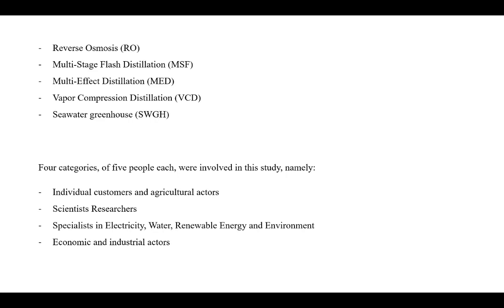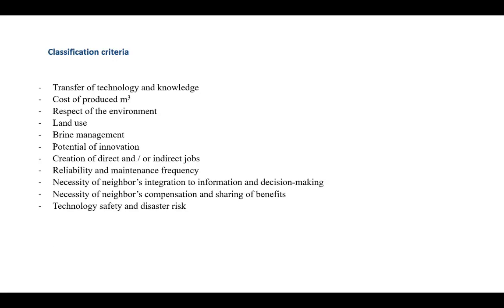Four categories of five people each were involved in this study, namely individual customers and agricultural actors, scientists and researchers, specialists in electricity, water, renewable energy and environment, and economic and industrial actors. This was done according to the following 11 economic, scientific, technical, environmental, and social criteria.